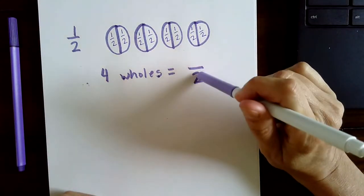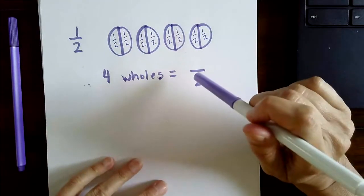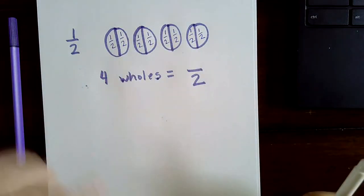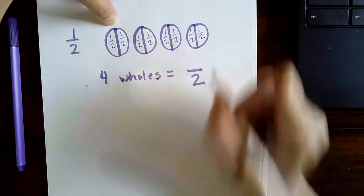So the denominator is going to stay a two, but the numerator is definitely going to be larger than the denominator because we have more than one whole. And we know that if it was two halves, that would be one whole. But it's not two halves. It's not one whole. It's actually four wholes.